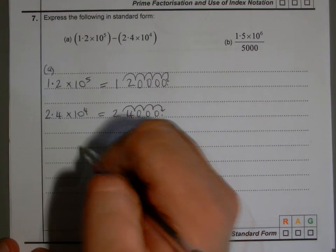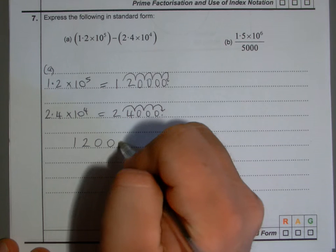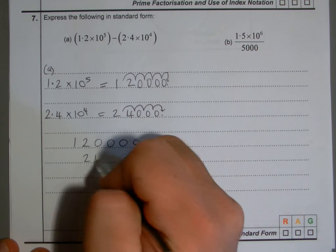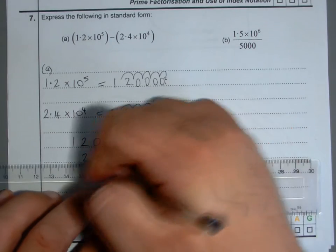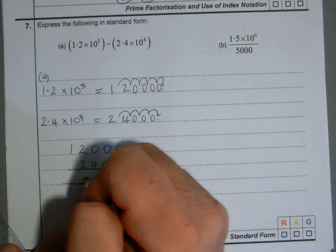It then says to take it away, so 120,000 take away 24,000. Now clearly here you can see the answer - it's just going to be 96,000.